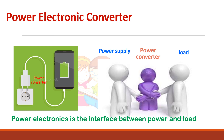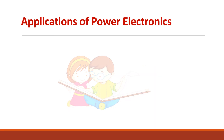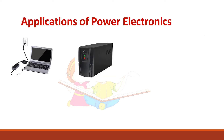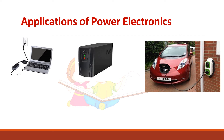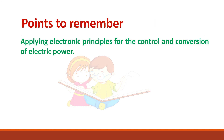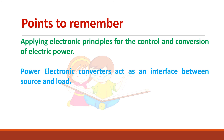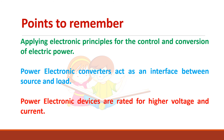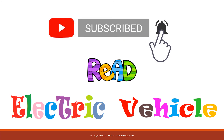The power electronic converter acts as an interface between the source and the load. Applications of power electronics include laptops, UPS, electric vehicles, inverter-fed ACs, and fan regulators which use a triac. To summarize: power electronics is applying electronic principles for the control and conversion of electric power; power electronic converters act as an interface between source and load; and they are usually rated for higher voltage and higher current. Please subscribe to our Reed Electric Vehicle channel. Thank you.